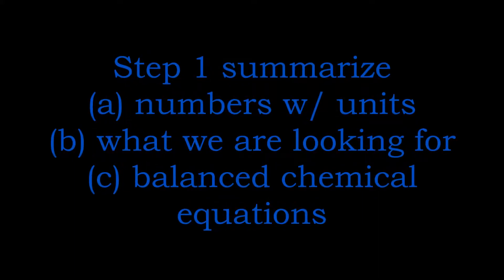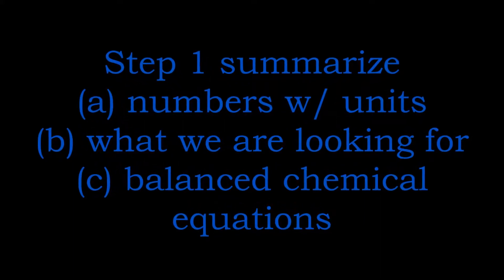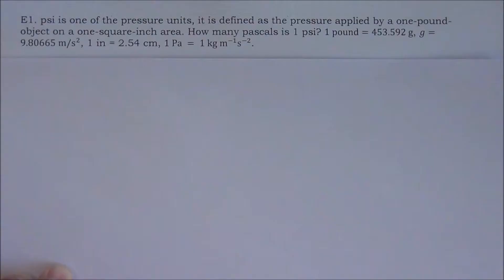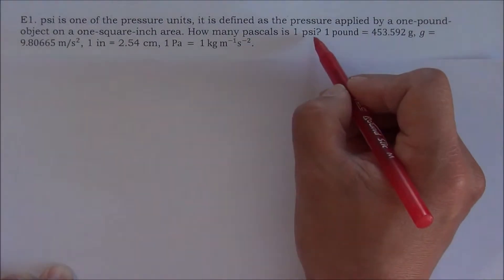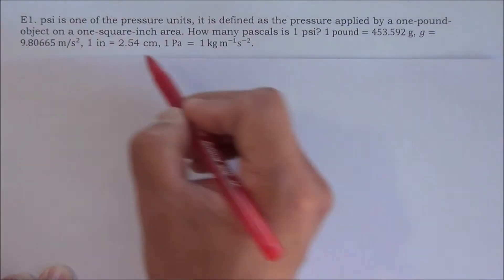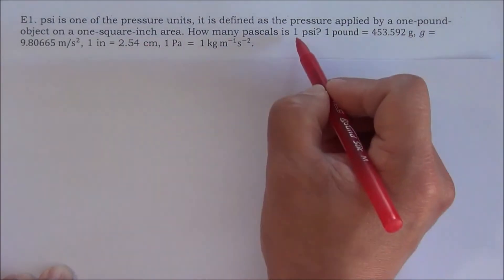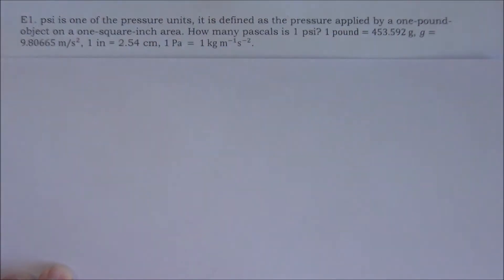When we are given a calculation problem, the first step is always to summarize the most important information. The most important information includes numbers with units, what we are looking for, and balanced chemical equations if there are chemical reactions in the problem.